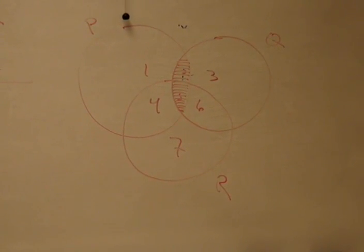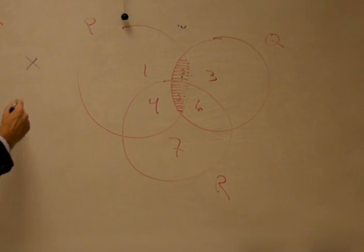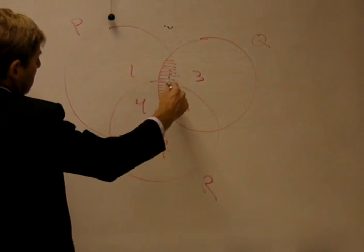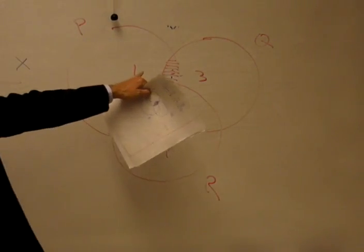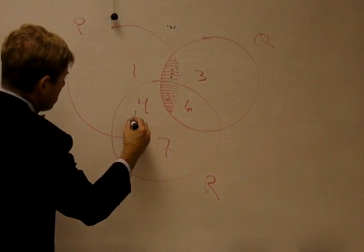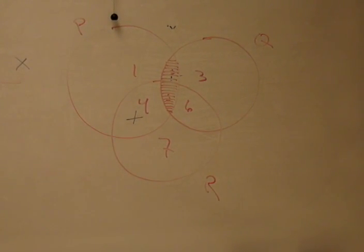Now, some P are R. So, we're going to be placing an X where there is P but also R. And if you recall, this segment here was P but also R. But we've already shaded out five. So, there's only one place to put the X, and that's in segment four. That some P are R.